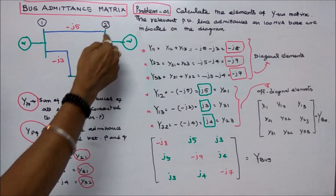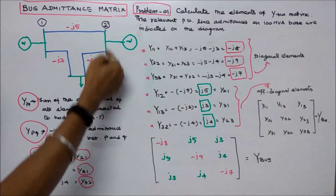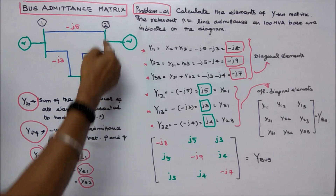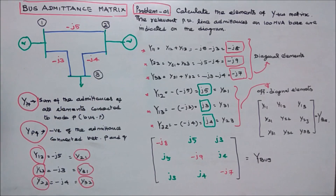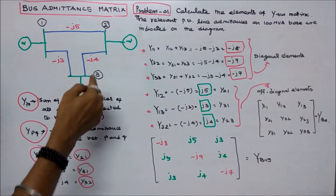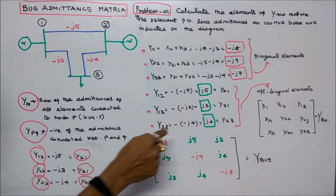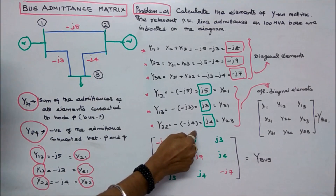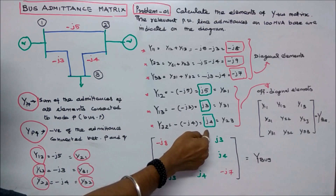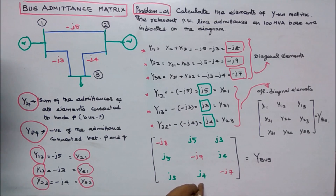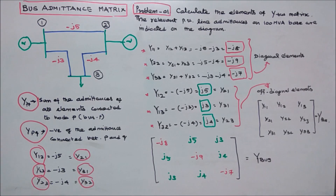Y32 is equal to negative of minus J4, which equals J4. So Y32 equals J4, and Y23 equals J4 as well. This completes the Y-bus matrix for Problem 1.